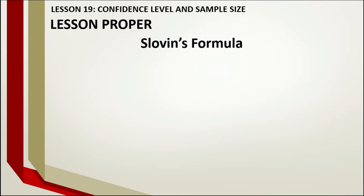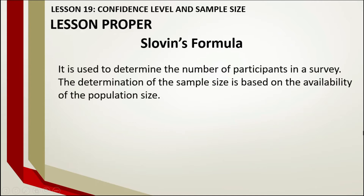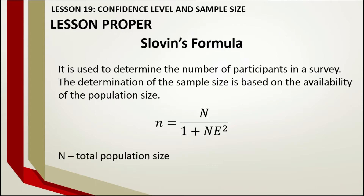Let's talk about Slovin's formula. It is used to determine the number of participants in a survey. The determination of the sample size is based on the availability of the population size. Slovin's formula is written as n equals N over 1 plus N times e squared, where capital N is the total population size and e represents the margin of error.